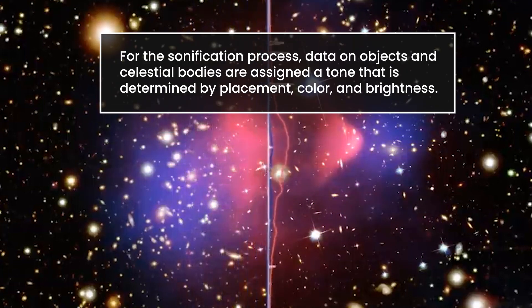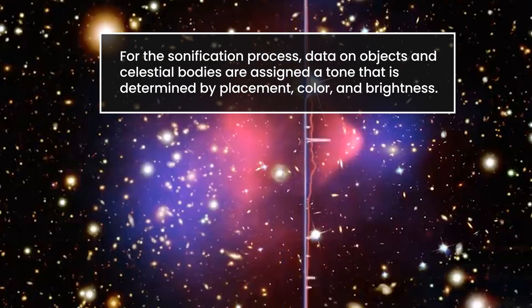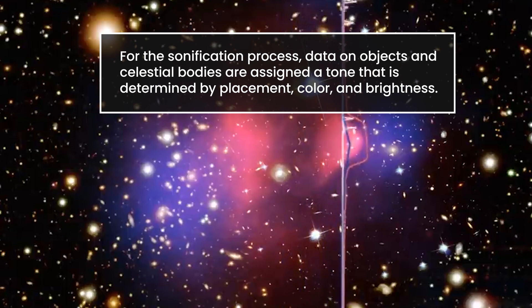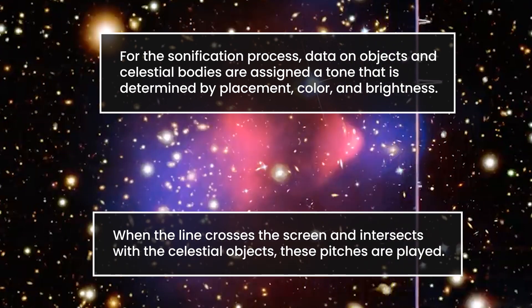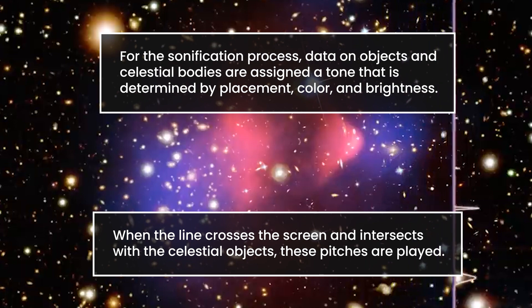For the sonification process, data on objects and celestial bodies are assigned a tone that is determined by placement, color, and brightness. When the line crosses the screen and intersects with the celestial objects, these pitches are played.